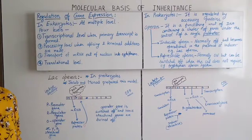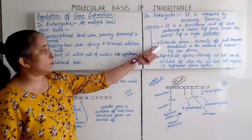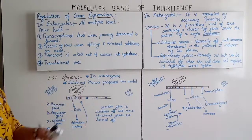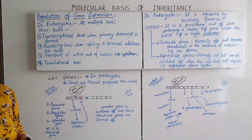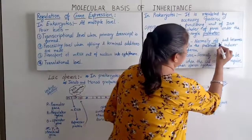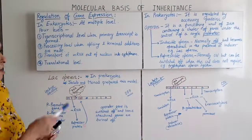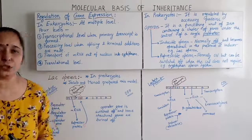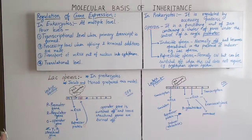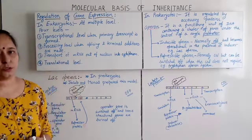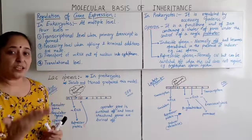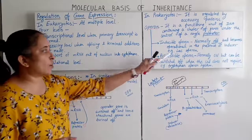Operons are of two types: inducible operon and repressible operon. An inducible operon is normally in the OFF condition but becomes operational in the presence of an inducer. An example is the lac operon — it normally remains off, and only when lactose is present does it switch ON.